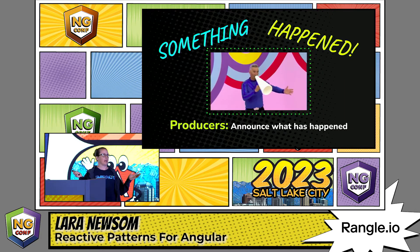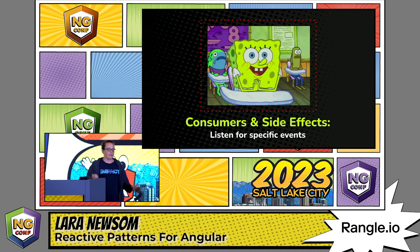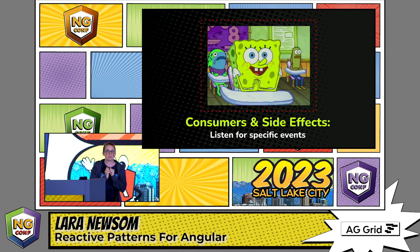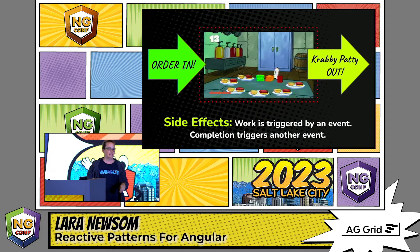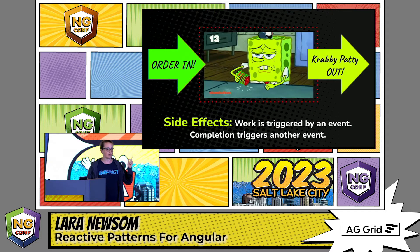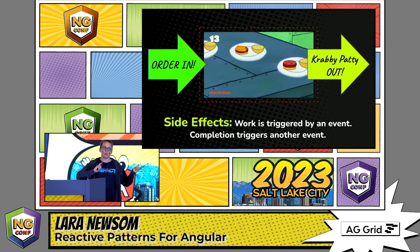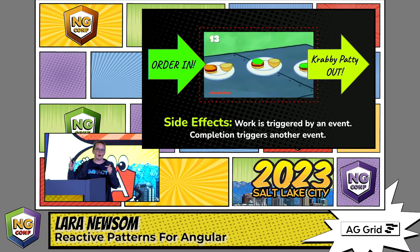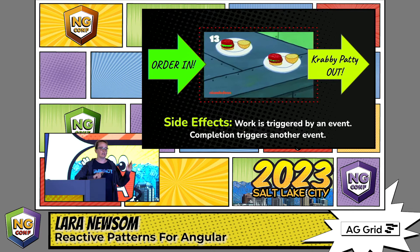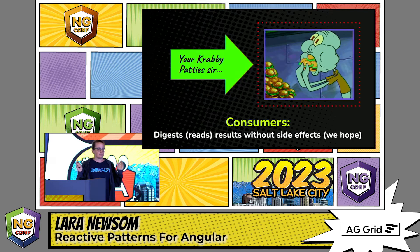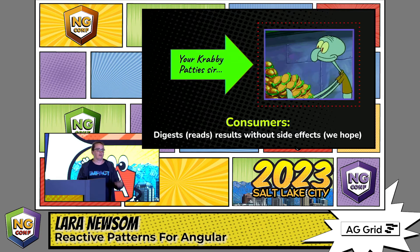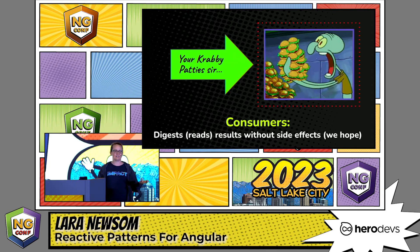Producers are like 'yo, something happened.' The side effects and the consumers are like 'I'm waiting for this one special thing to happen.' SpongeBob in his kitchen is waiting for order in — he gets the order in, he makes some Krabby Patties. Order in doesn't go out; it's Krabby Patties that go out. Squidward's just sitting around, ready to consume — he's going to digest the results without any side effects.